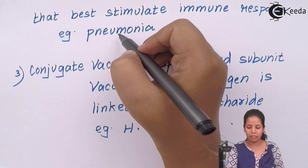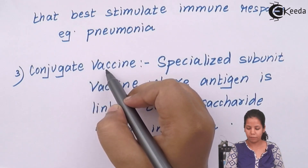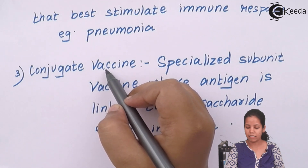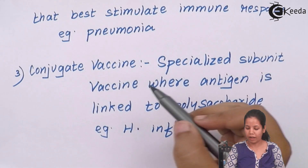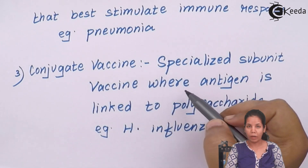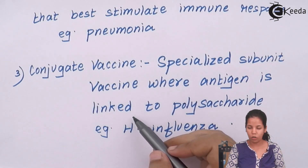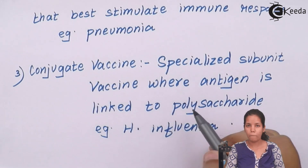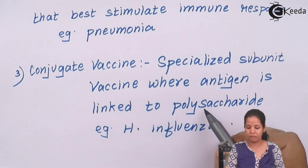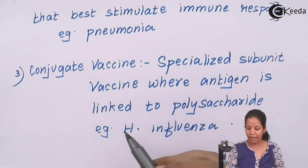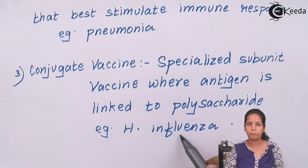The third kind of vaccine is the conjugate vaccine. These vaccines are specialized subunit vaccines where the antigen is linked to a polysaccharide — it is essentially a combination vaccine. An example of conjugate vaccines is the influenza vaccine.